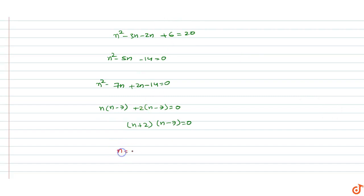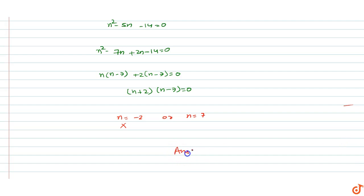We get two values: either n equals minus 2 or n equals 7. But n is a natural number, so n equals minus 2 is not possible. Therefore, our answer is n equals 7.